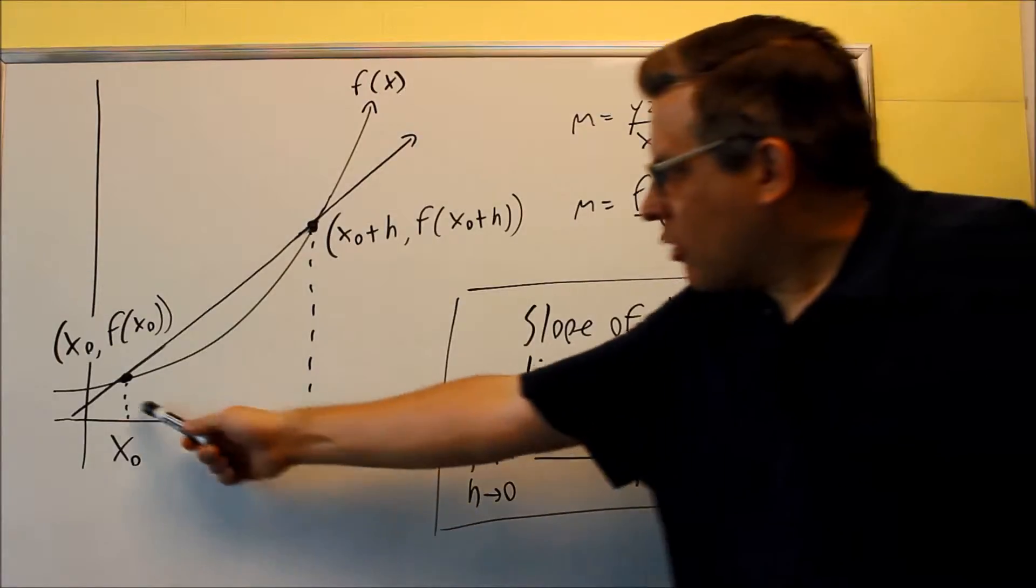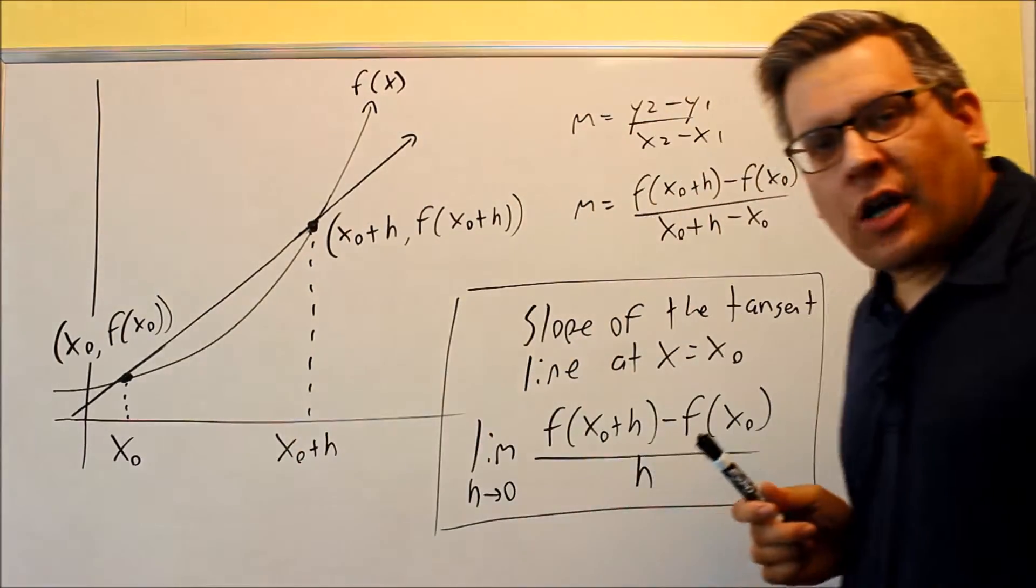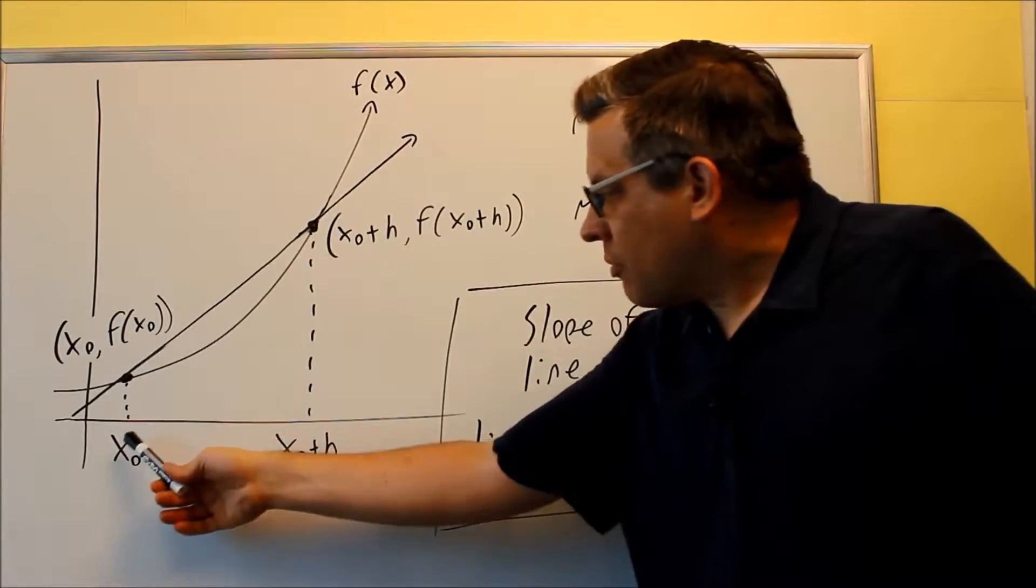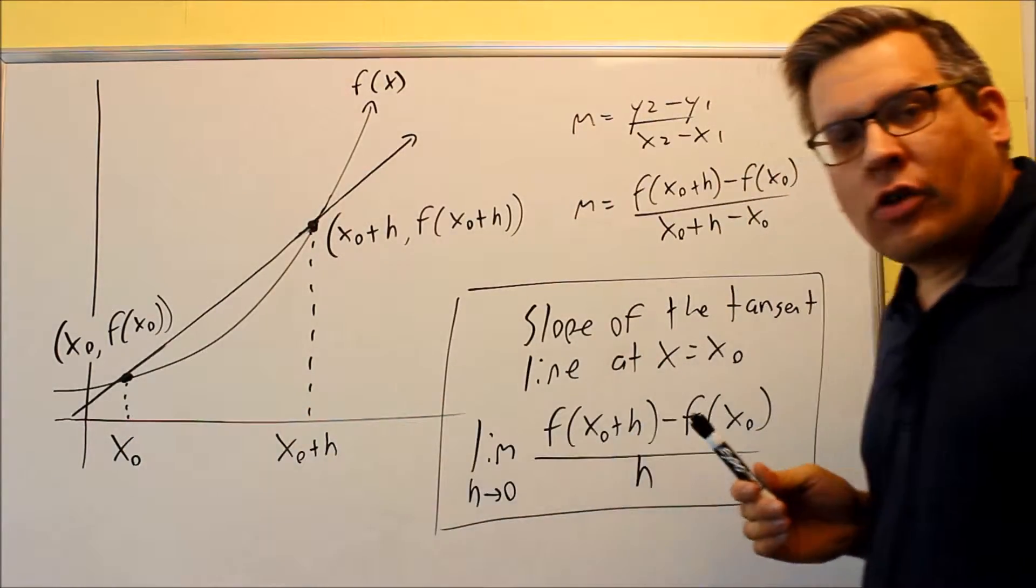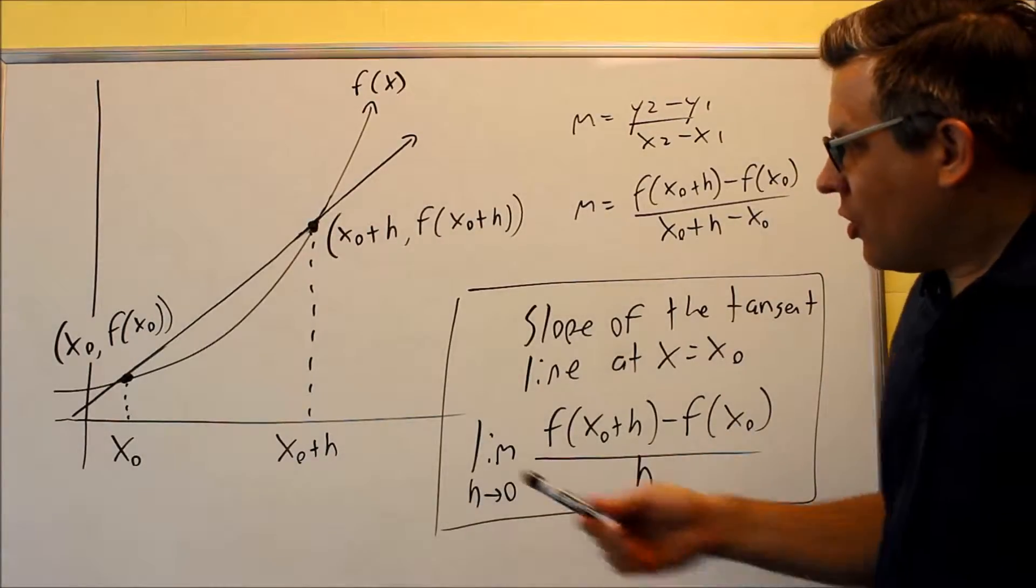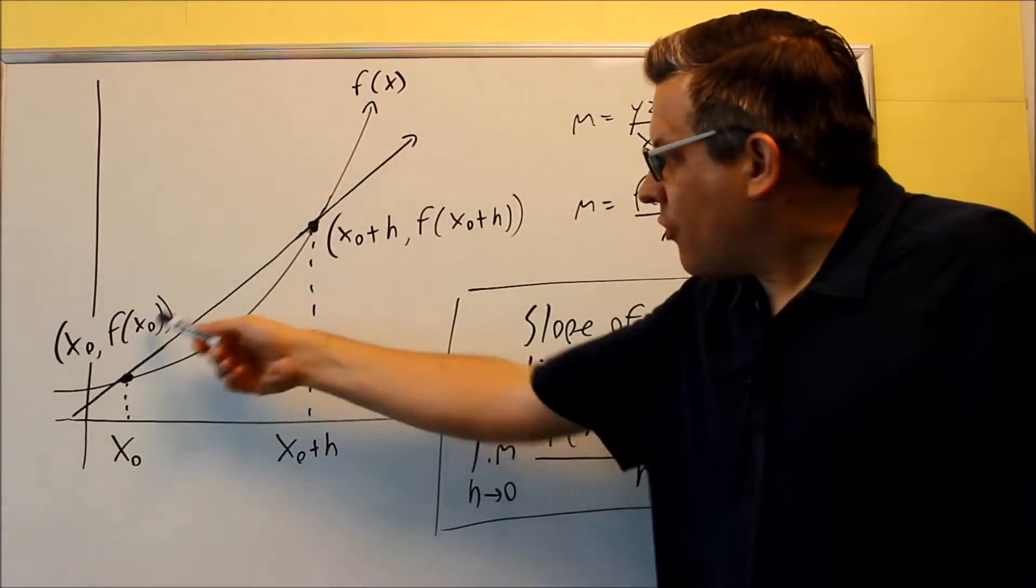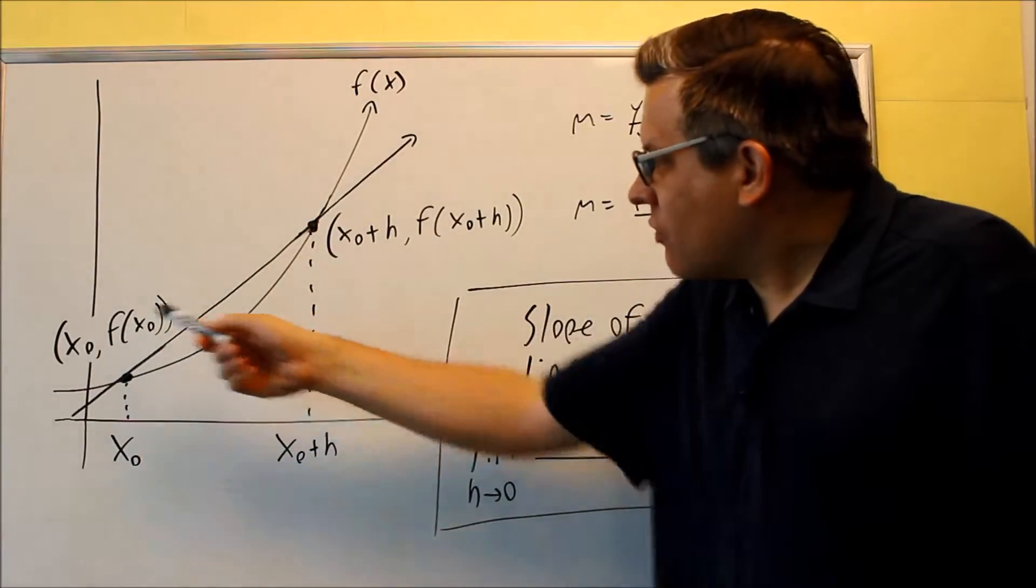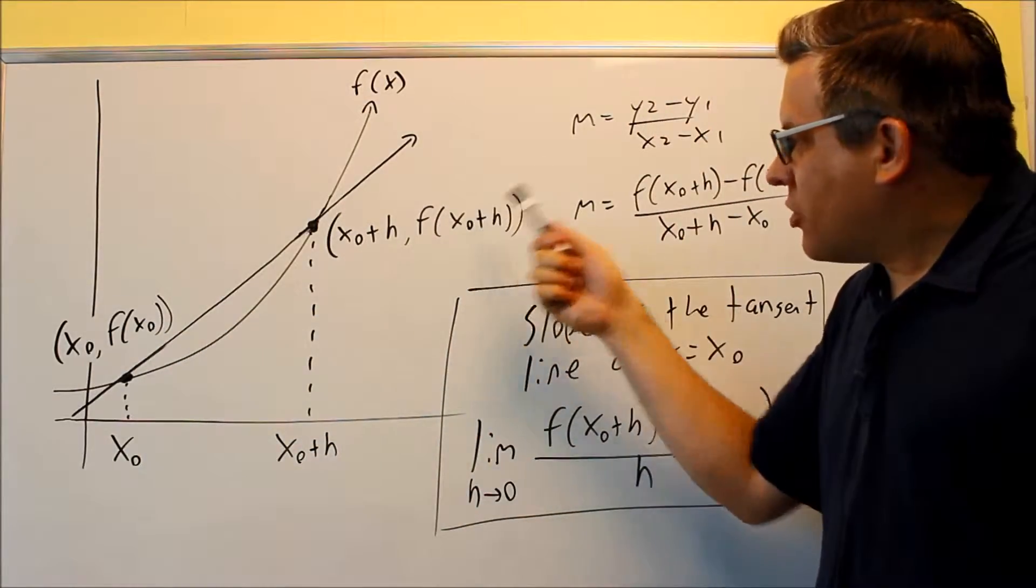What we'll do is we'll first start with the point that we want to look at, that's going to be our x sub zero, and then we're going to add a little increment to it. The h that's here is the little amount that you're adding over from x sub zero. Since we have two different x values, we can find two different y values, so it's written here in function notation, f of x sub zero and f of x sub zero plus h.